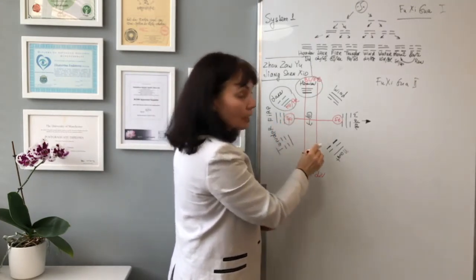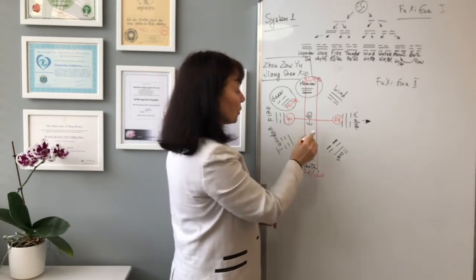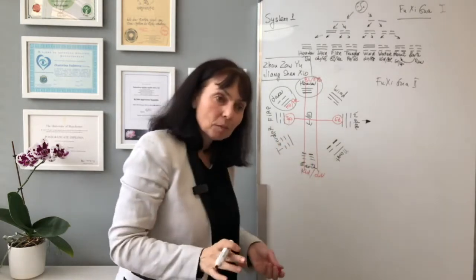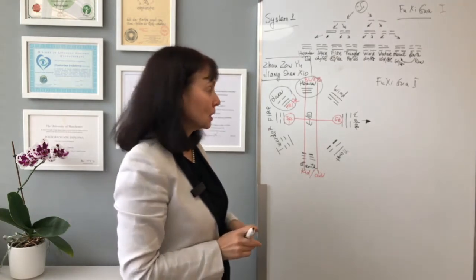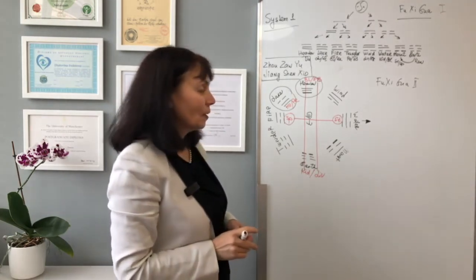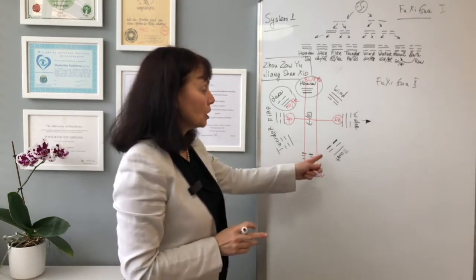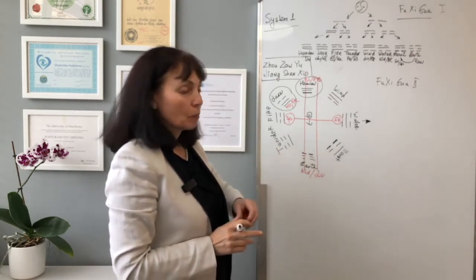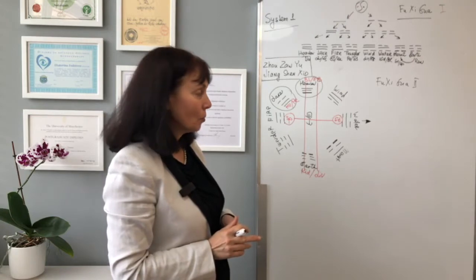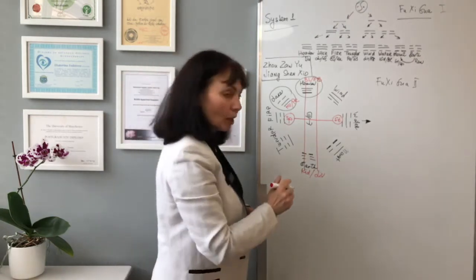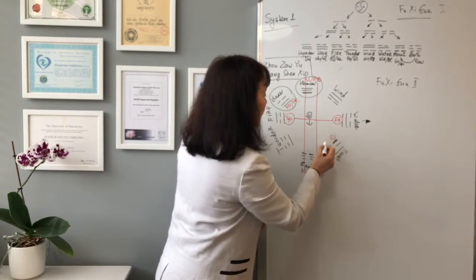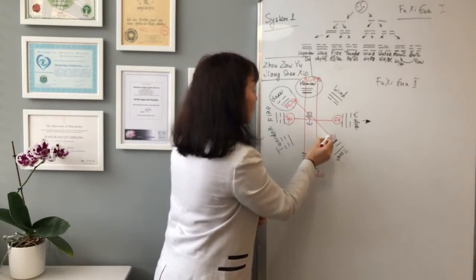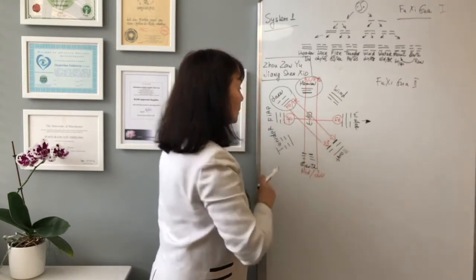On another side, the yin meridians towards the heart and pericardium, I believe, must be yang meridians. Who are the yang meridians which originate from the bottom? And they are yang. Who are they? San jiao and small intestine. That's right. So they create couples between each other.